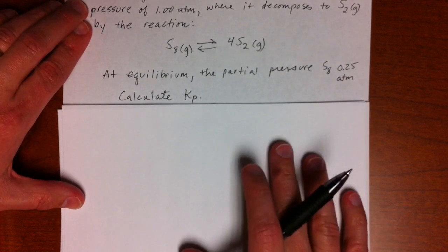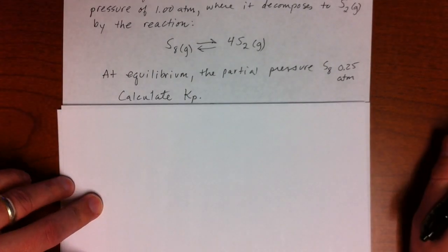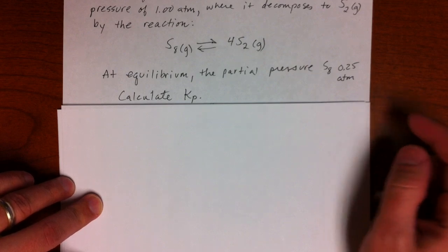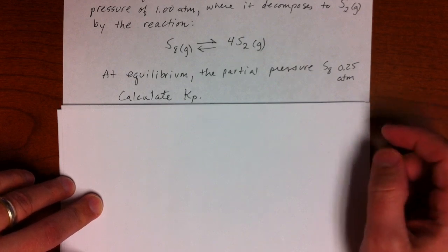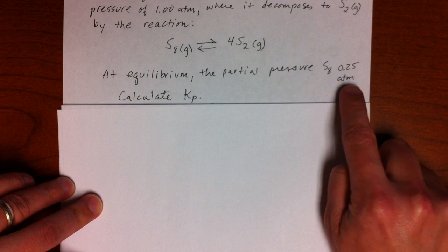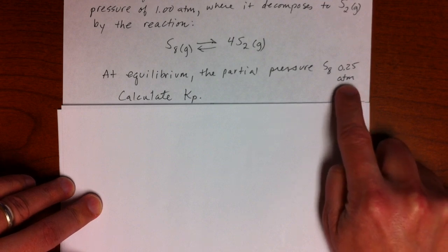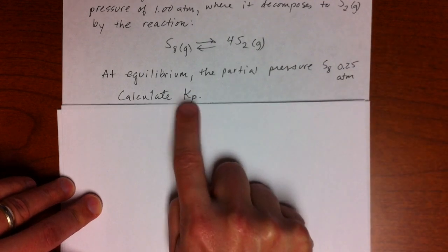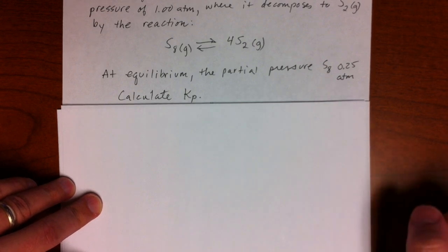All right. Since we're talking about Kp, we measure the equilibrium concentrations not in moles per liter, but in pressure unit atmosphere. So that's implied. Anytime we want Kp, pressures are atmospheres.